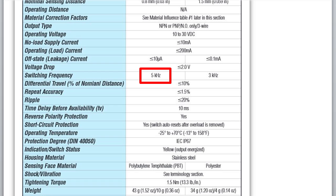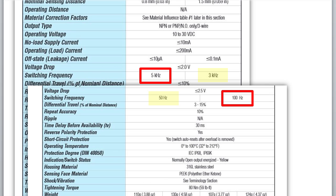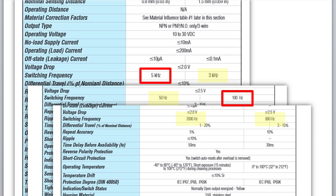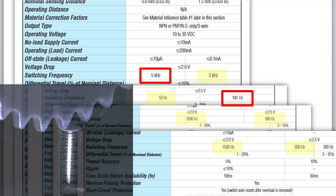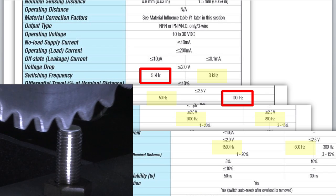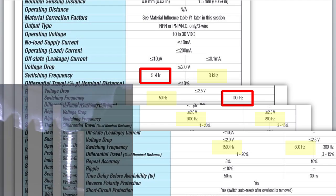Keep an eye on the switching frequency of the sensor. Looks like this one is 5000 Hz but you might see some that are 100 Hz. So if you are trying to detect objects moving by faster than 100 Hz, like gear teeth for example, and you are using a 100 Hz sensor, then you are going to miss some of the objects.